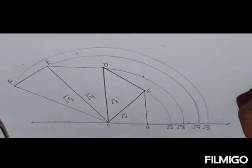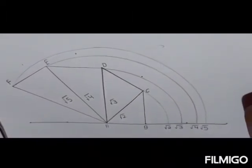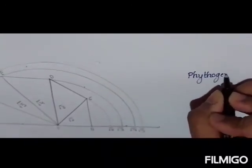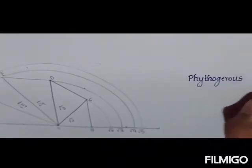Now by using the Pythagorean theorem, we are going to show how the values became root 2, root 3, root 4. Let's start doing it.